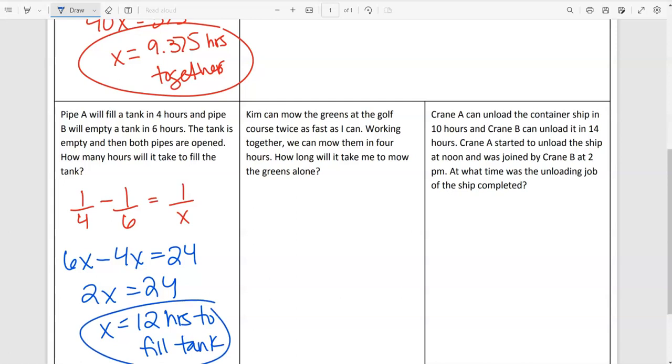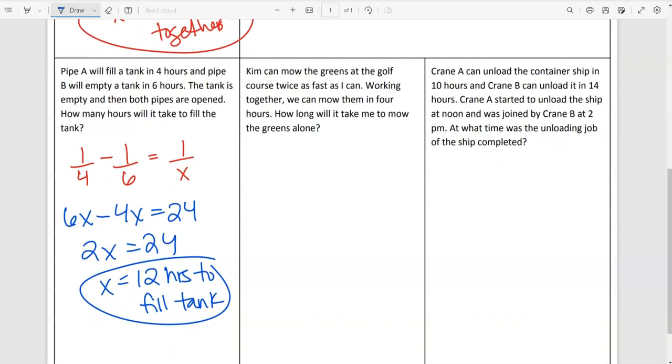So as we're filling it up and draining it out at the same time, they're working against each other. It's going to take 12 hours for it to be completely full. X can't be zero, which would represent no time. So it is really applied to these. That makes sense. My next one. Kim can mow the greens at the golf course twice as fast as I can.